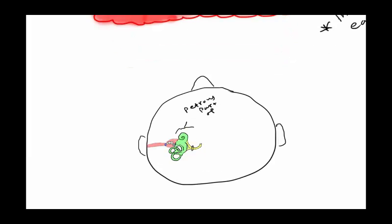The inner ear is situated in the petrous part of the temporal bone, medially to the middle ear and laterally to the internal acoustic meatus.